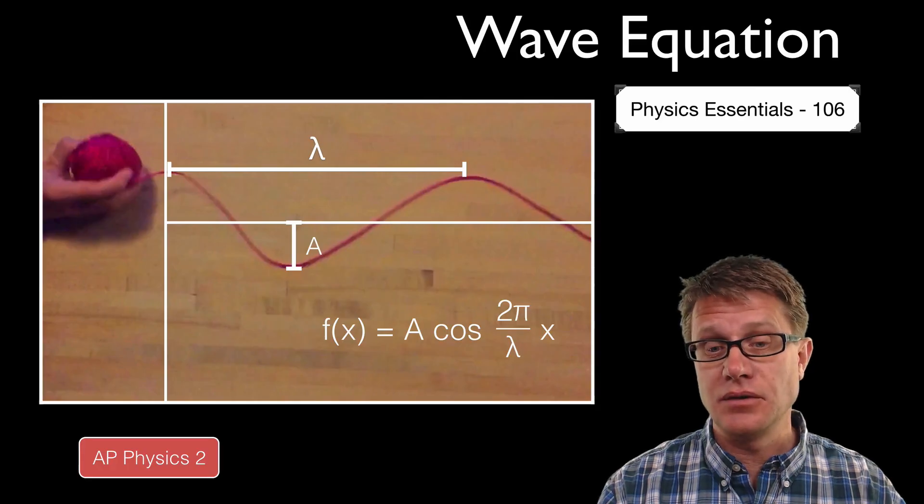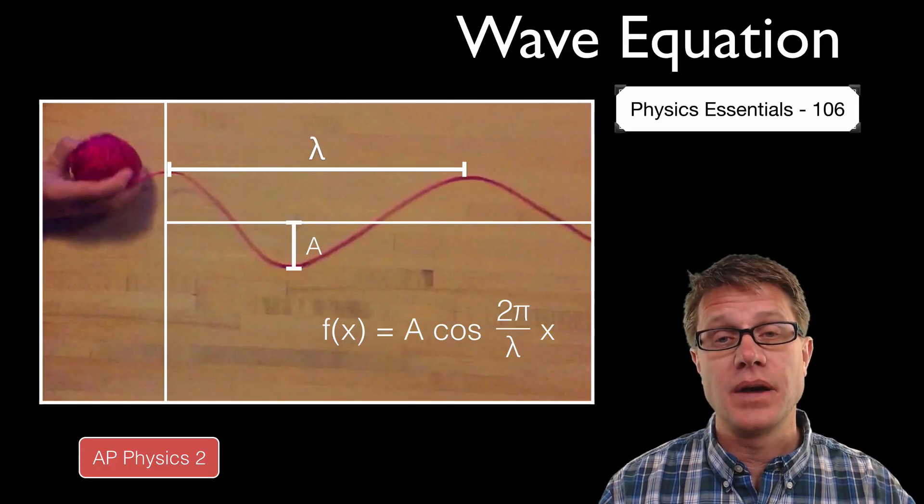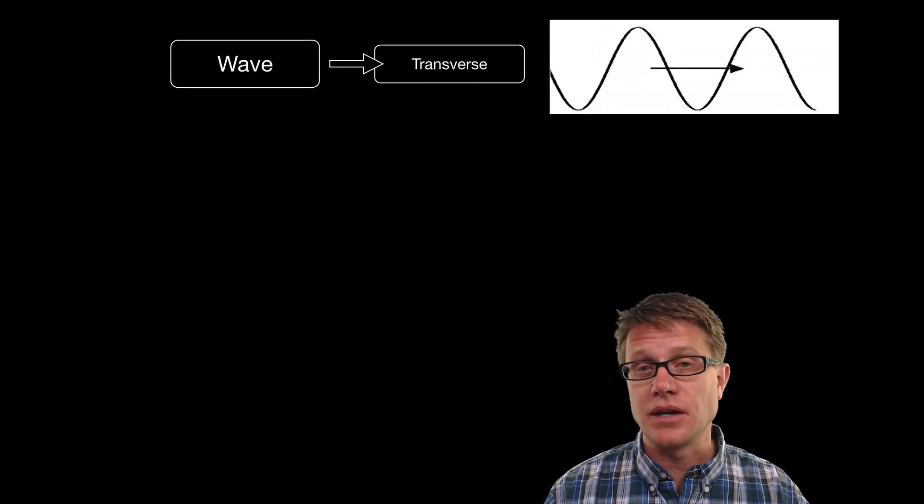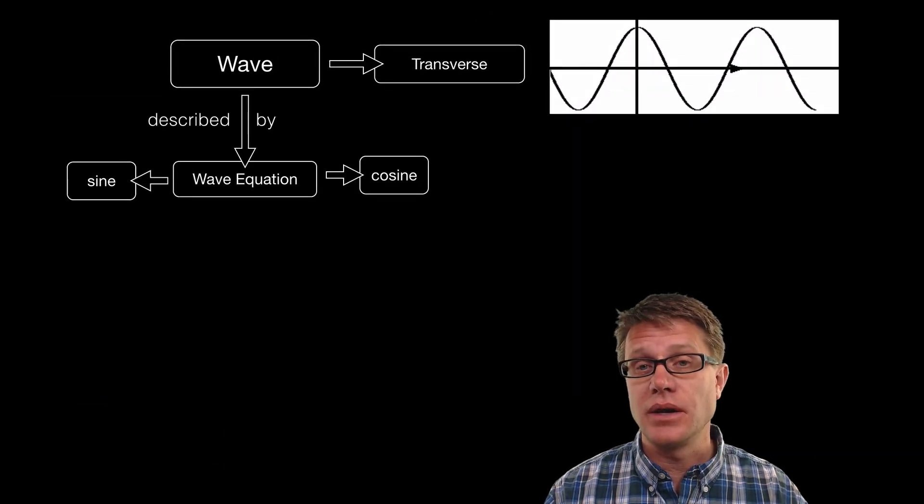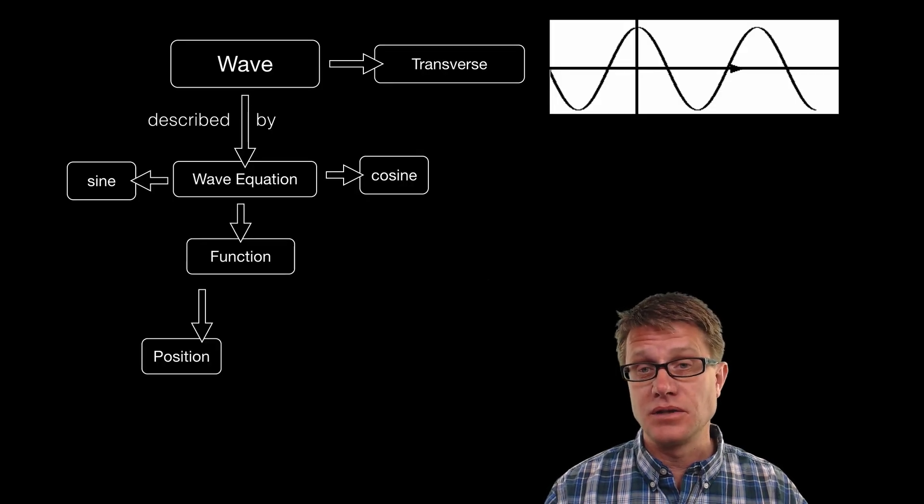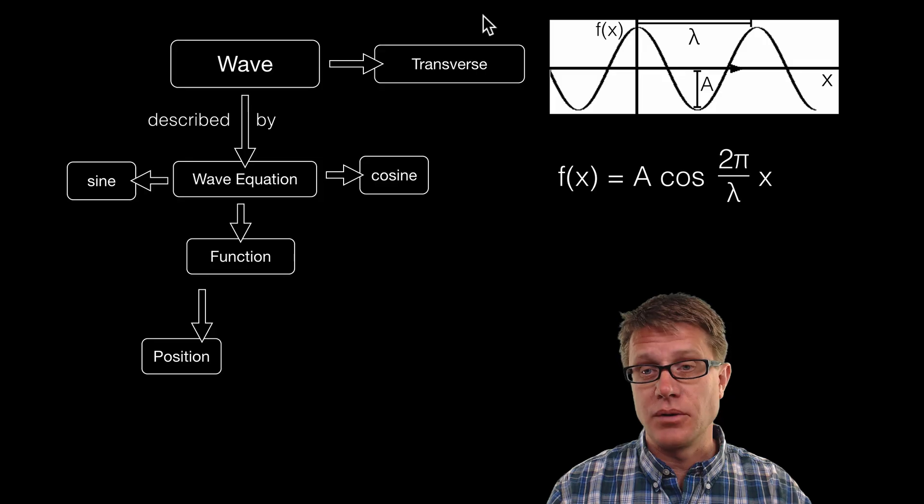It contains the amplitude and the wavelength and how they affect x or the position of the wave. And so in transverse waves like this we can describe it using a wave equation, either a cosine or a sine wave, and so that could be a function of the position.